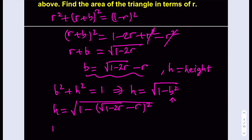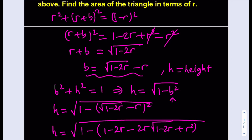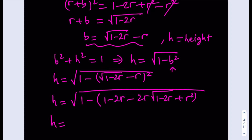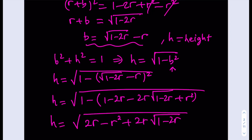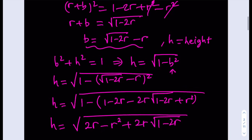Let's simplify. h equals the square root of 1 minus — squaring (√(1−2r) − r) gives a squared minus 2ab plus b squared, i.e., (1−2r) − 2r·√(1−2r) + r squared. Subtracting from 1, the 1 cancels out, so h equals the square root of 2r minus r squared plus 2r multiplied by the square root of 1 minus 2r. That's the height of the triangle in terms of r.